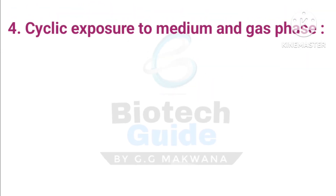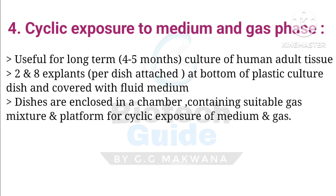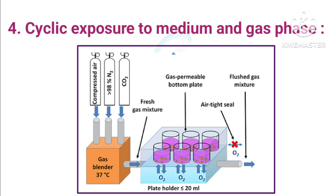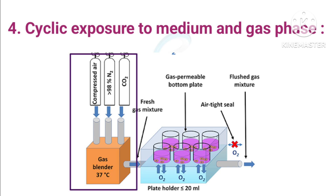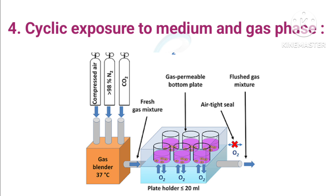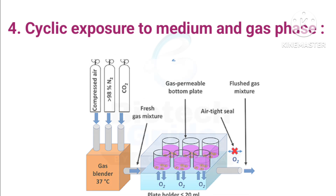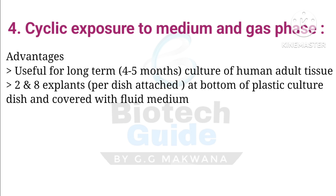The fourth method is cyclic exposure to medium and gas phase. It offers greater durability — long-term culture of human adult tissue for four to five months. Two to eight explants per dish are attached at the bottom of a plastic culture dish, covered with fluid medium, and then the dishes are enclosed in a chamber containing a suitable gas mixture on a platform for cyclic exposure of the medium and gas. A gas blender provides gases like CO2 and compressed air, and remaining gases are released. The advantage is that explants remain under comfortable physiological conditions, making physiological studies easy to analyze and interpret.